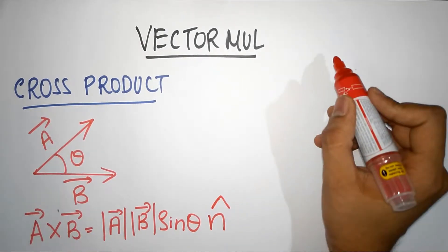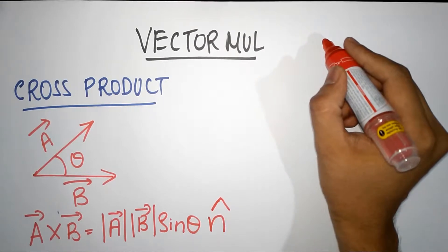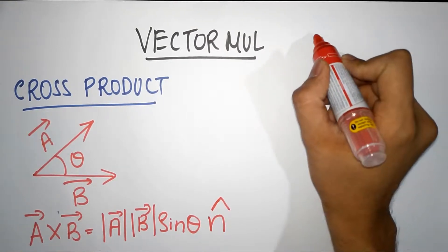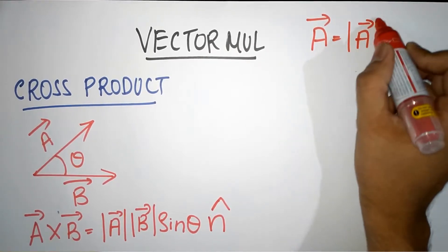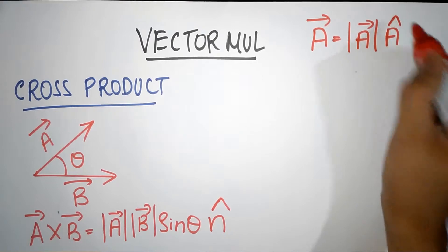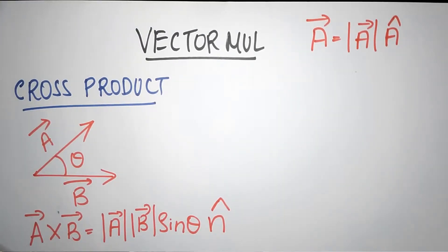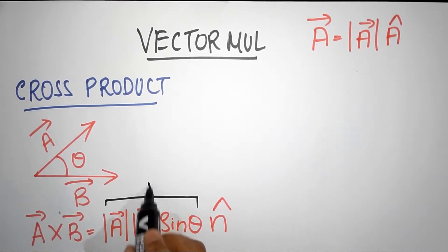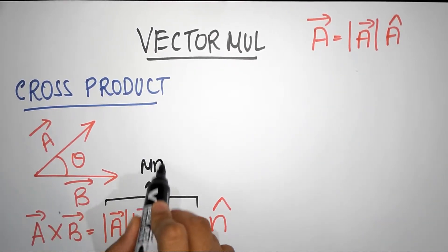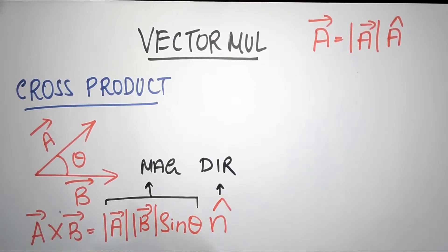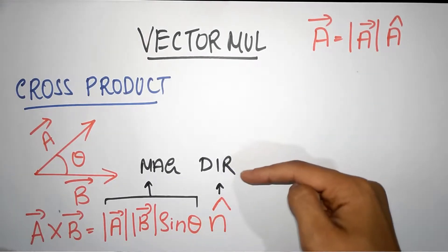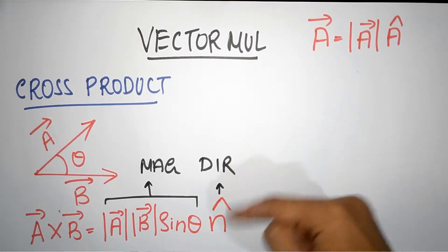What is the meaning of this n-cap? Remember, I told you that if you have any vector A, it can be written as the magnitude of A multiplied by a unit vector A-cap. This part over here represents the magnitude — this is the magnitude of the cross product. And this part gives you the direction for the cross product. So we now have to understand what is the direction and how we calculate it.